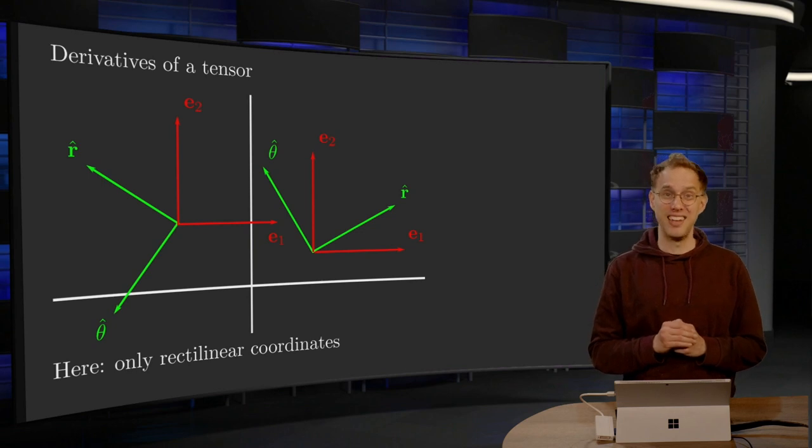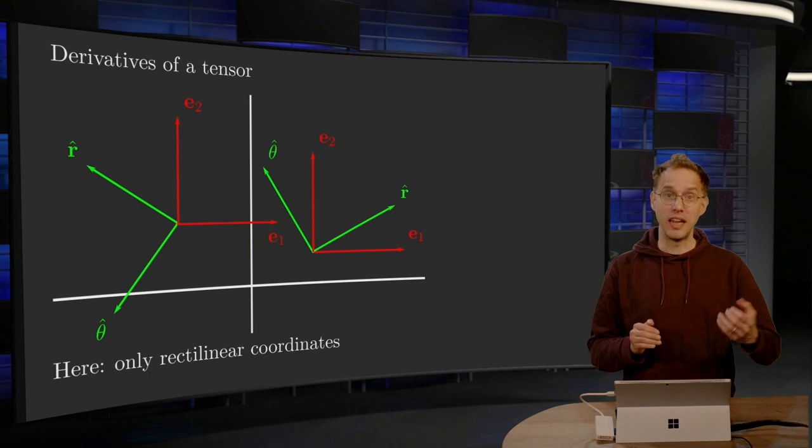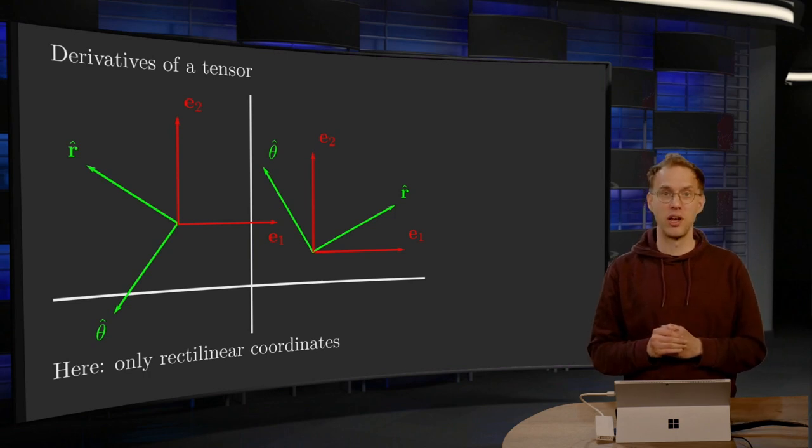As long as you have rectilinear coordinates, everything is fine. Then your basis vectors are constant. However, if you take for example polar coordinates, you'll see what is happening.